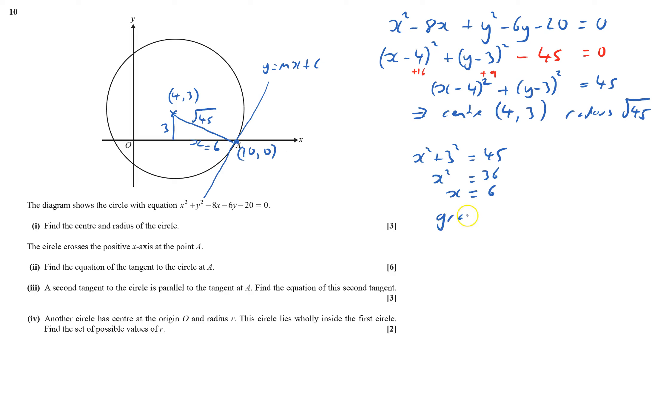Gradient of OA, with O at the center, equals minus 3 over 6, which is minus 1 half. Therefore, gradient of the tangent equals the negative reciprocal, which is 2. So y equals 2x plus c.